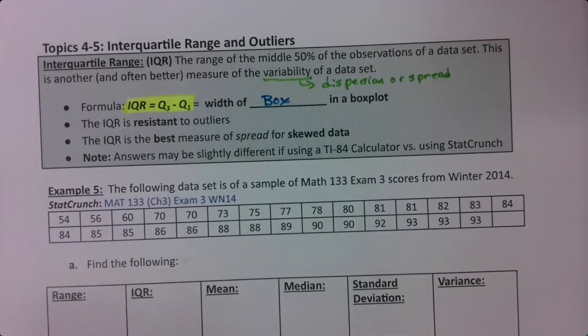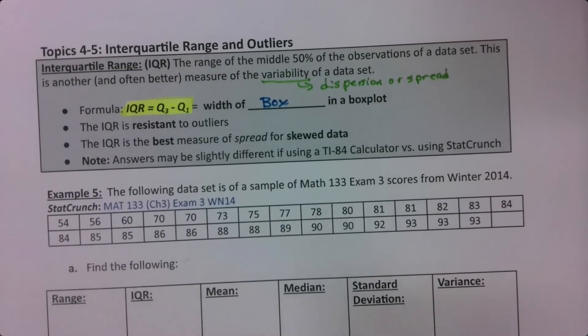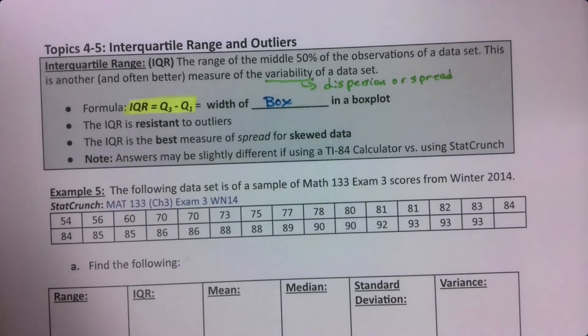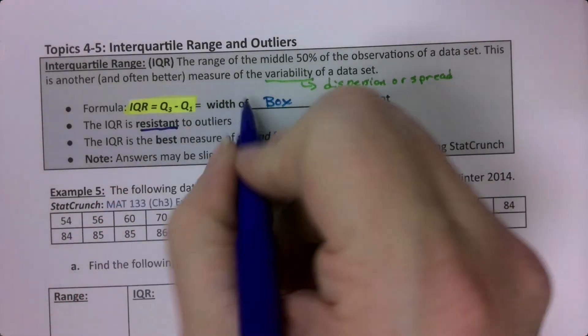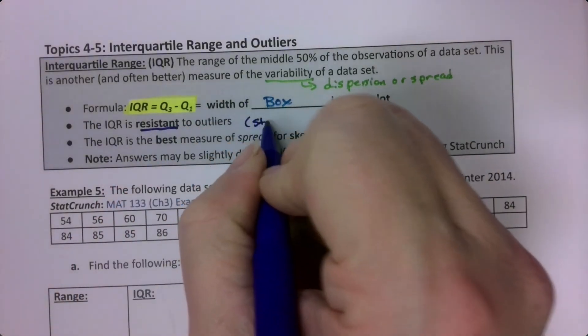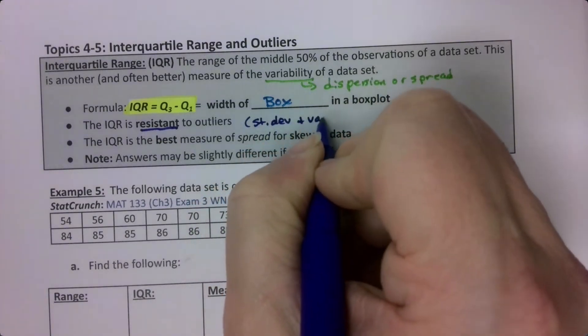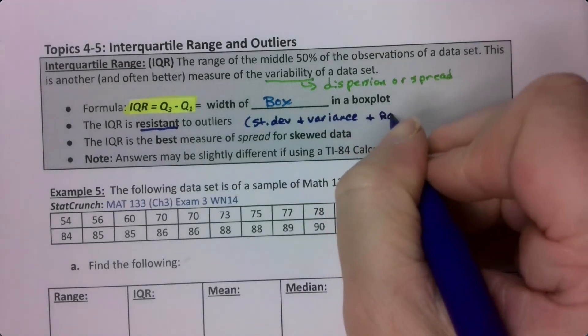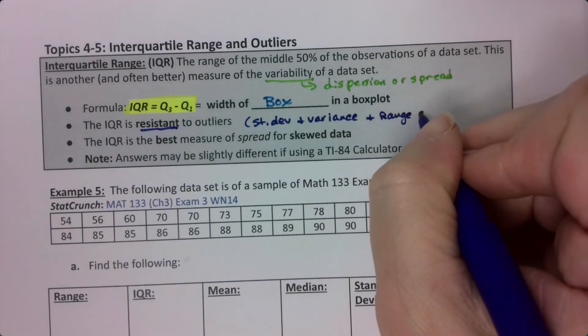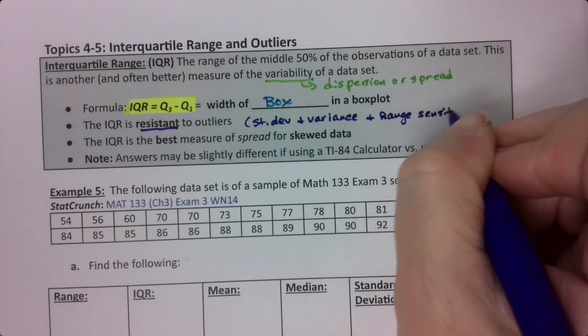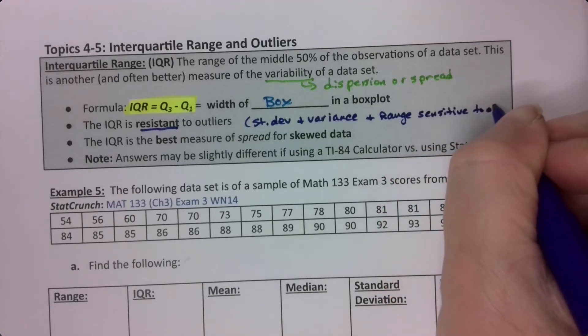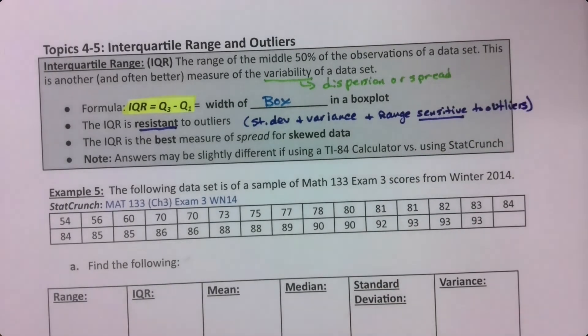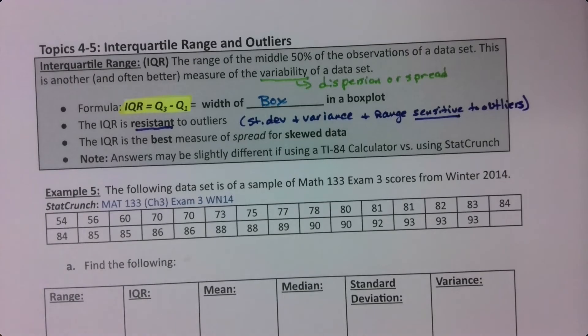Now what's advantageous about the IQR is that like the median, it's resistant to outliers, which if you remember, the standard deviation is not. So IQR is resistant, standard deviation and variance are not. Standard deviation and variance and range actually are all susceptible, they're all sensitive to outliers. If you have an outlier, they really get affected. But the IQR is great because it resists that.